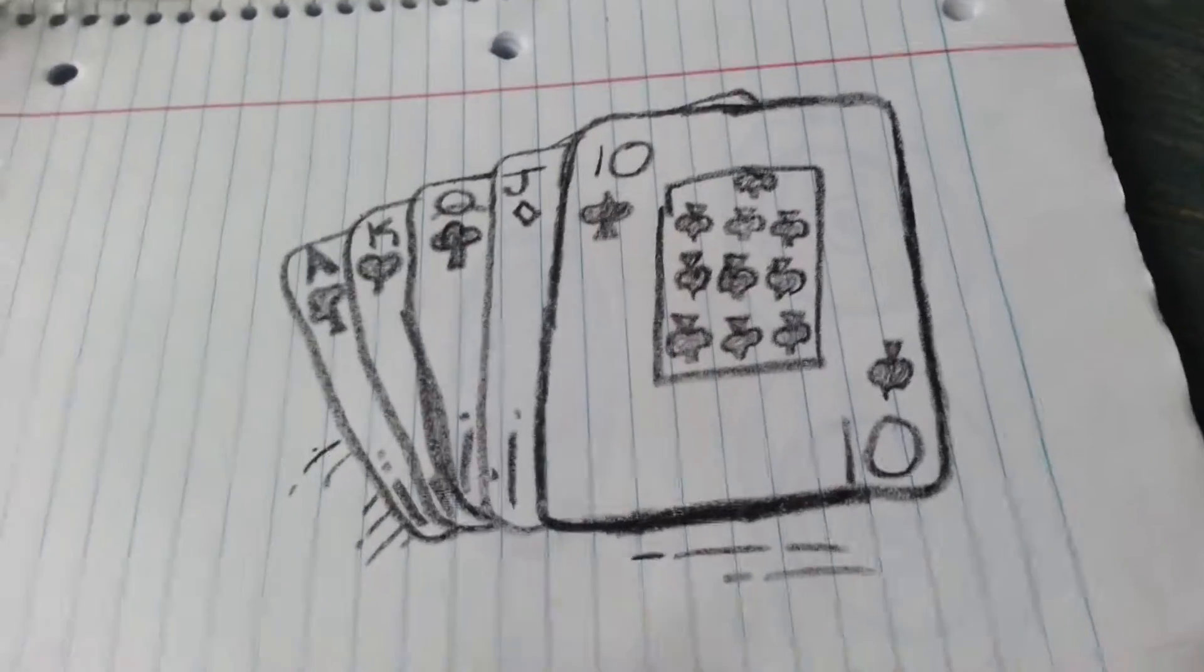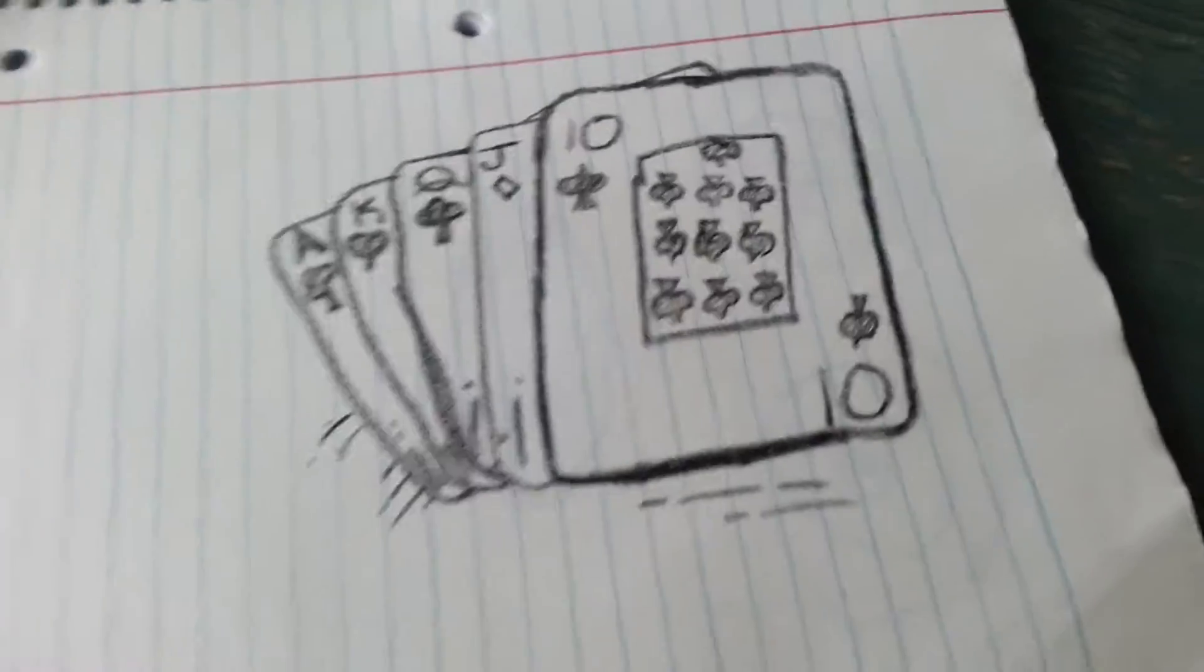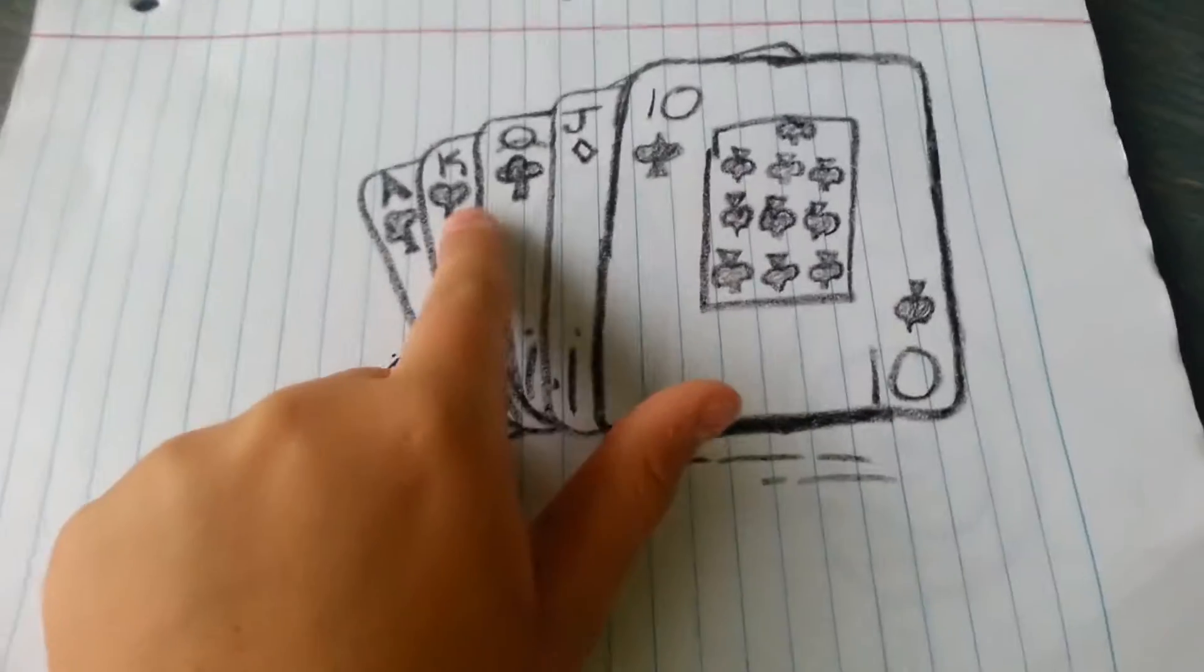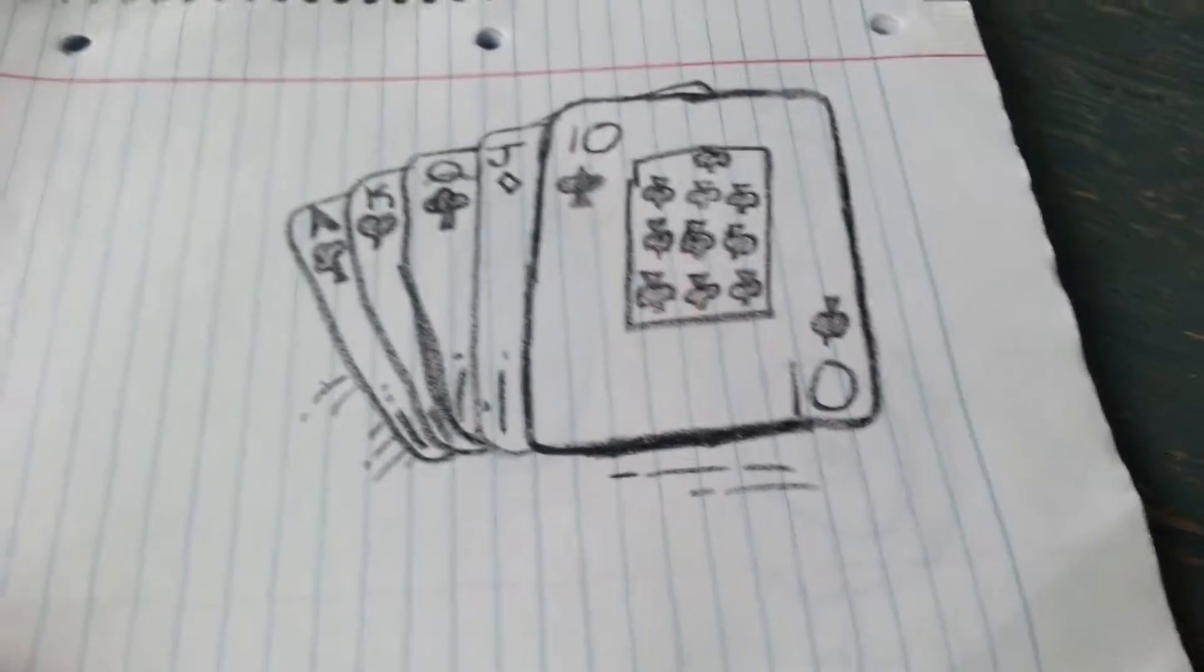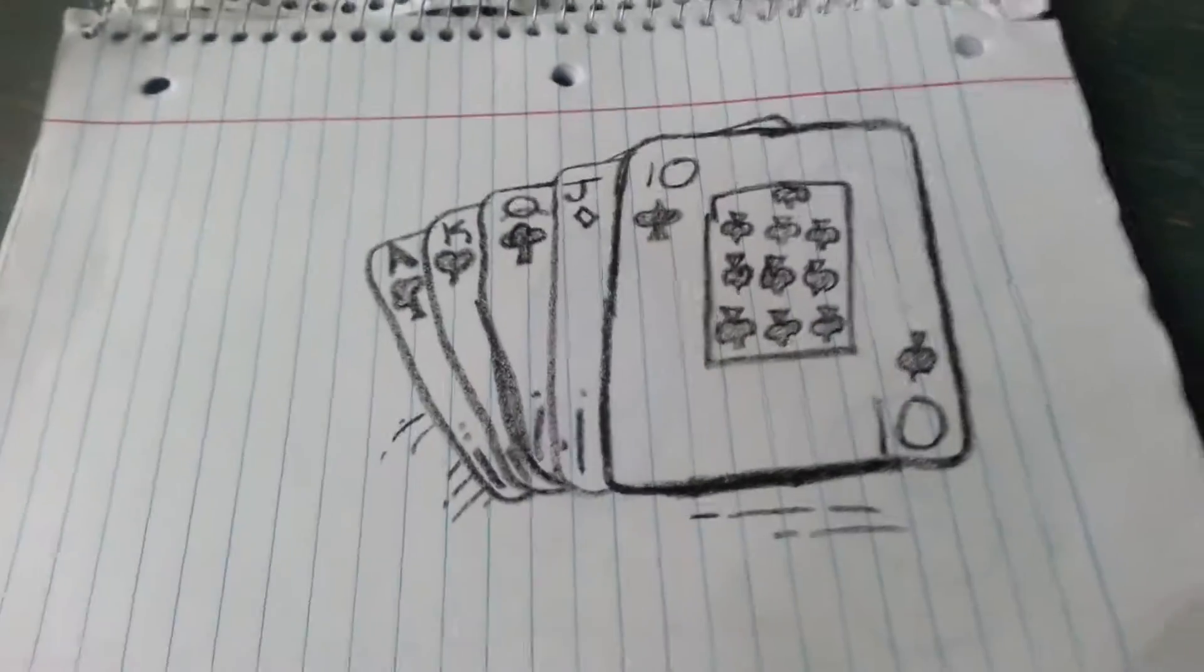The next one was, I got this off the internet, these cards that are like in a fan shape. So the 10, the jack, the queen, the king, the ace, just I guess in order. I don't know if that's in order because I don't really play cards.